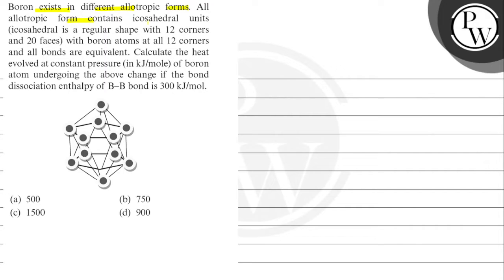All allotropic forms contain icosahedral units, which means regular shape with 12 corners and 20 faces with boron atoms at all 12 corners and all bonds are equal.